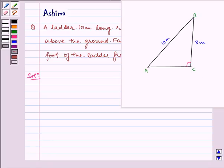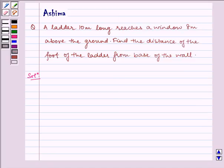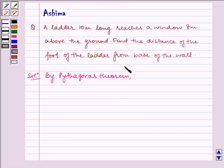So now, by Pythagoras theorem, we can say that AB square is equal to AC square plus BC square.